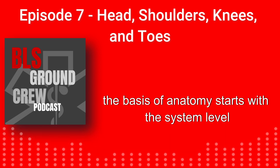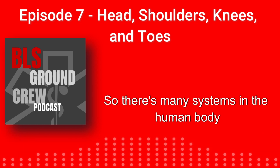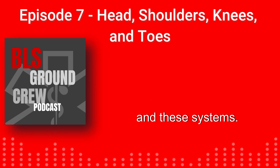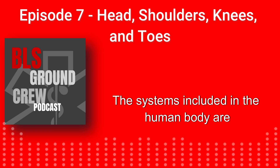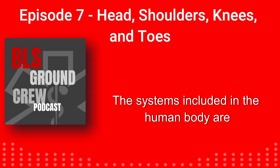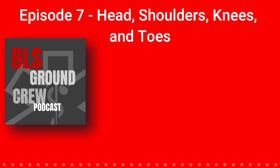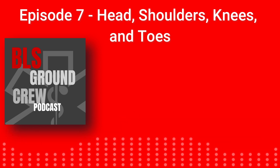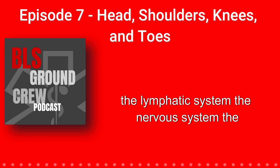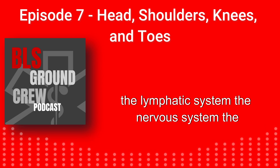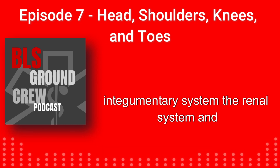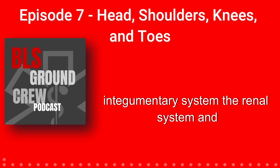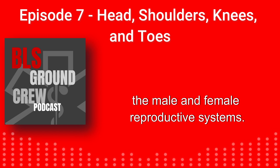The basis of anatomy starts with the system level. There are many systems in the human body. These include the musculoskeletal system, the respiratory system, the cardiovascular system, the blood system, the lymphatic system, the nervous system, the endocrine system, the digestive system, the integumentary system, the renal system, and the male and female reproductive systems.